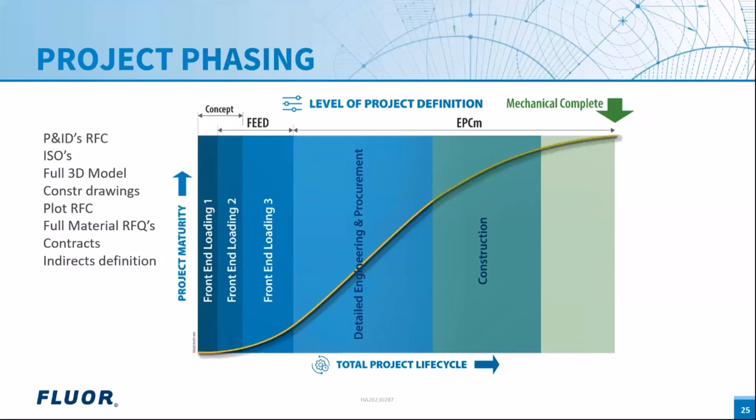In the EPC phase, the release-for-construction P&IDs are translated into actual construction activities, overlapping with detailed design, and finally mechanical completion is reached. We want to focus on the front-end conceptual phase to understand how estimates are used there.